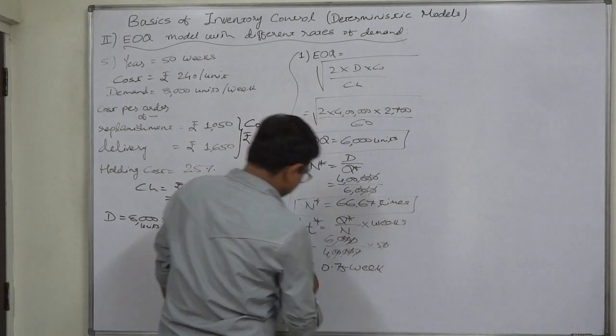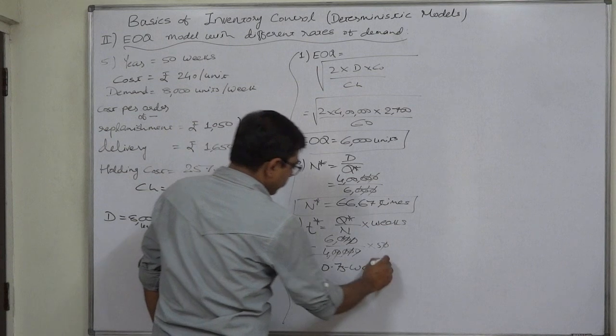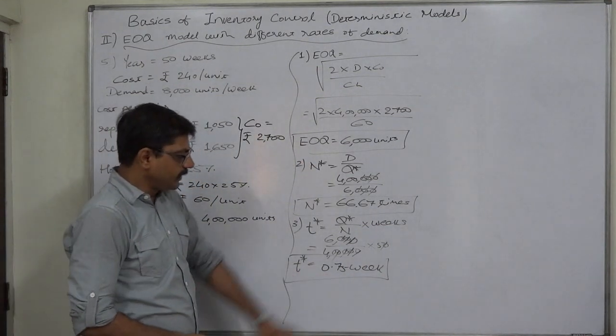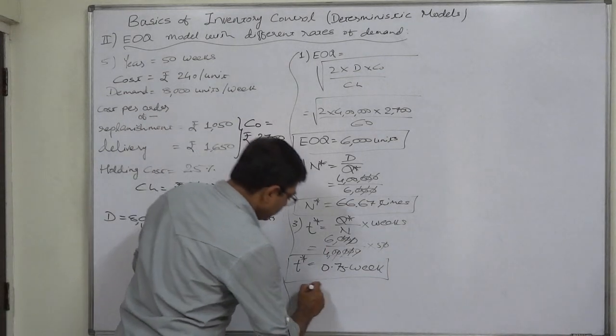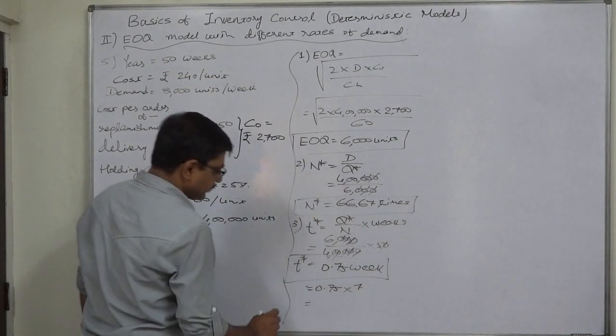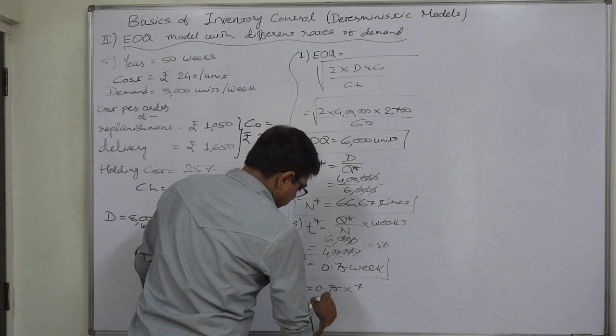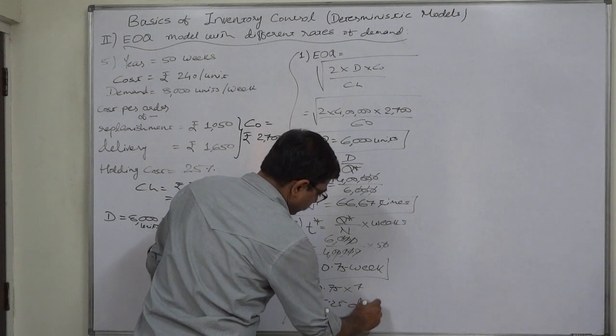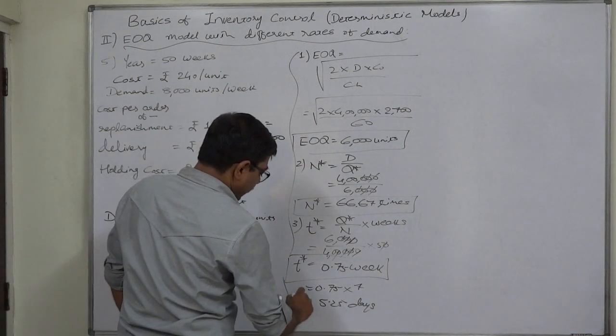The gap between two consecutive orders is 0.75 weeks. We can convert this into number of days because the week is always of seven days. It is 5.25 days approximately. So on every sixth day we have to place an order of 6,000 units. This can be the interpretation.